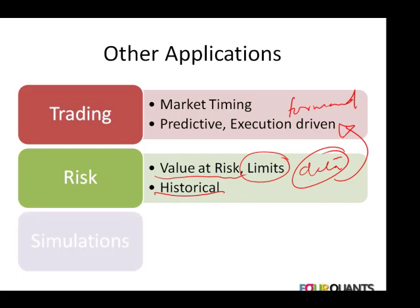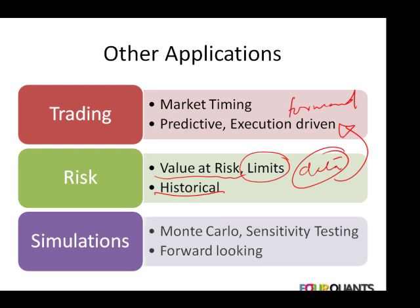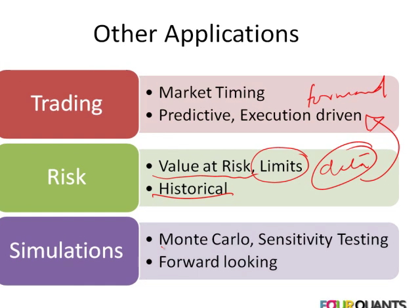After trading and risk, the next big application is simulation, where we could take any of the questions — investment, valuation, funding, trading, or risk — and throw in a simulator that tells us what state of the world our model would find itself in. We primarily use Monte Carlo simulation. The objective is to use the simulation to understand how the model, the financial security, and the decision we've made would turn out under a range of scenarios. Like the trading model, simulations are primarily forward-looking but still rely on historical data.